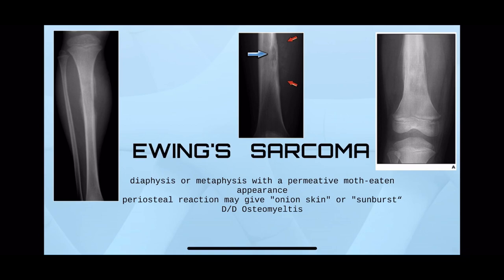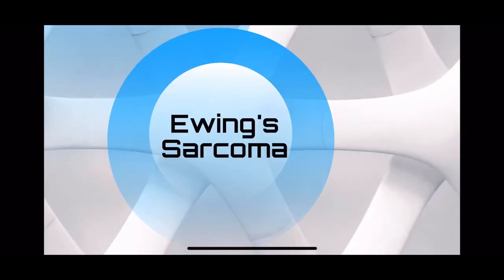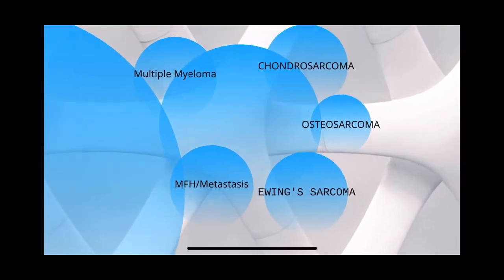The typical finding is an onion peel periosteal reaction. So if you see an X-ray of the diaphysis with a lamellated periosteal reaction in a child, think of Ewing sarcoma — simple. I find Ewing sarcoma is the easiest to diagnose.